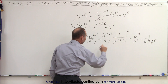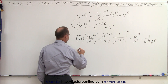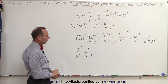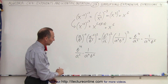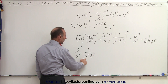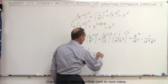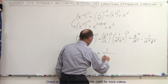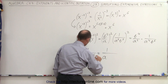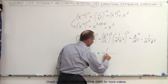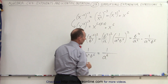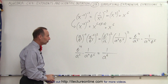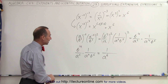Now how do we do that? Let's rewrite what we have. Notice we have two a's in the denominator, so this can be written as 1 over a to the 2 plus 4 power, which is a to the 6th power. So we've combined the two factors with the a.